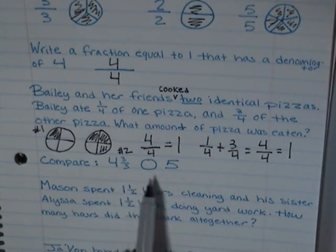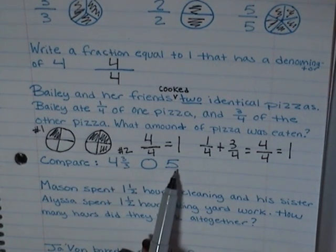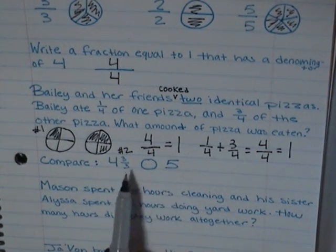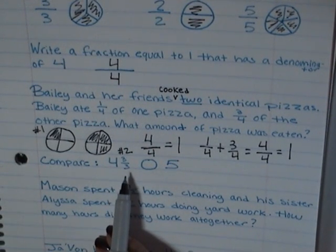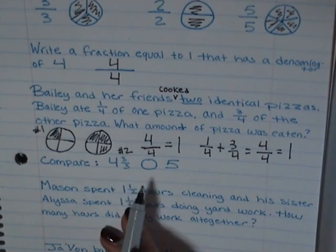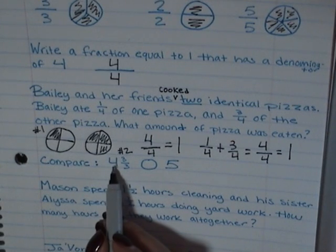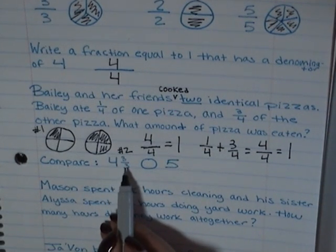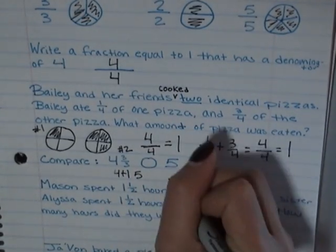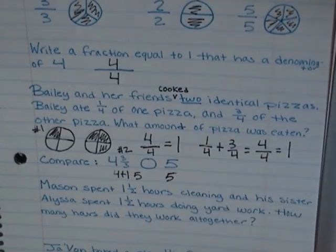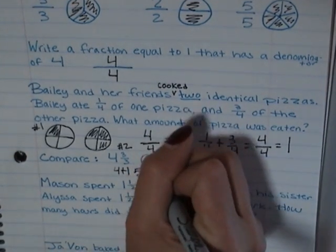It says compare these two numbers. So I have four and three thirds and five. Well, what do I know about three thirds? If my numerator and my denominator are exactly the same, what do I know? I know that this is really one. So if I take my four whole plus my other one that is a whole, it really looks like this. Four plus one. So if I compare these two numbers, five and five, I would say that they are equal.